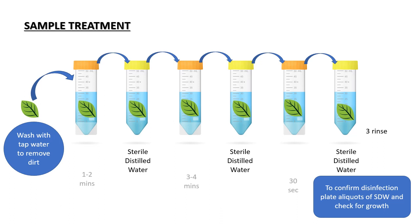Sample treatment is very important because you cannot just use the leaf collected from the field and directly inoculate it into media. There is a lot of dirt and many other microbes present on the surface of your sample, and those will grow in your media. Since we are interested in endophytes, to minimize contamination we need to treat our sample properly. First, wash your sample with running tap water to remove the dirt.